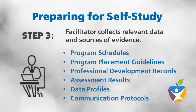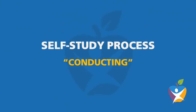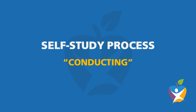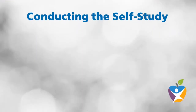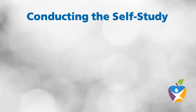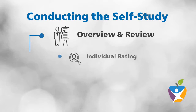The second part of the process is conducting. Conducting consists of four simple steps. First, overview and review — this is where the facilitator explains the process to the team and the team reviews and asks questions. Next, we perform individual ratings, which rates the current planning and implementation of intervention. The team reviews relevant data and sources of evidence to help determine the ratings.